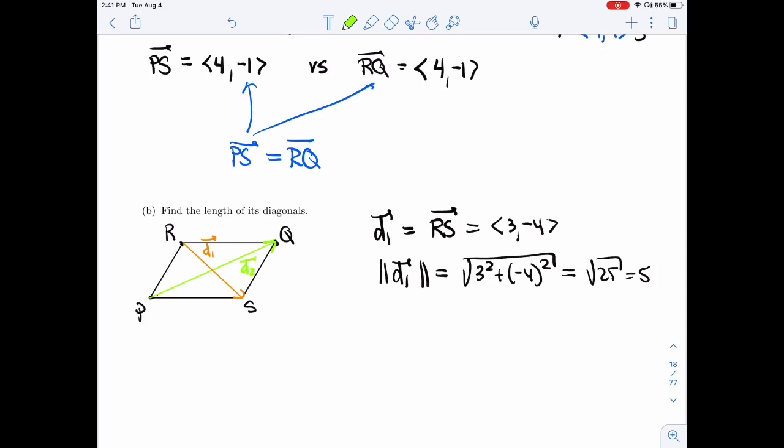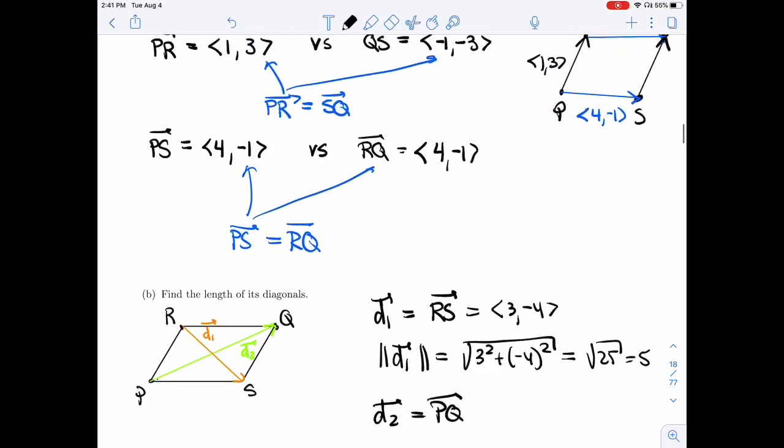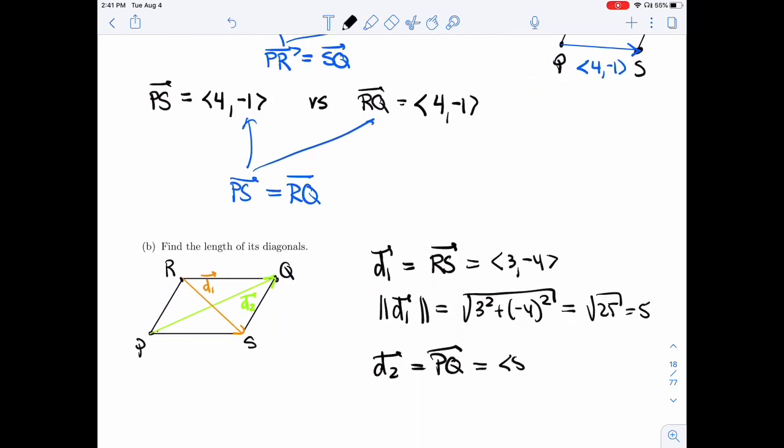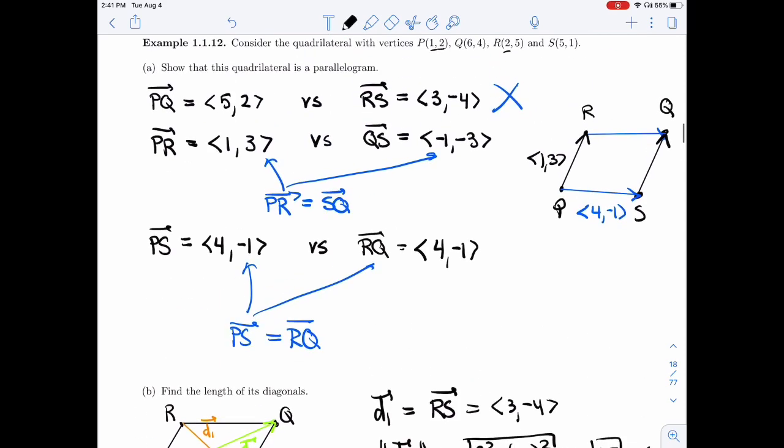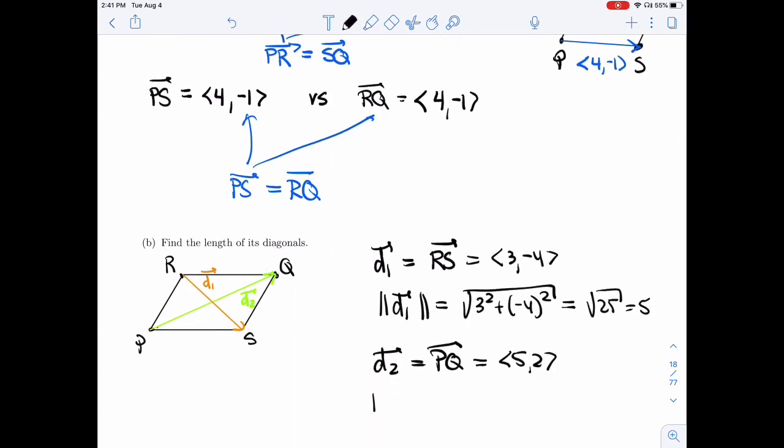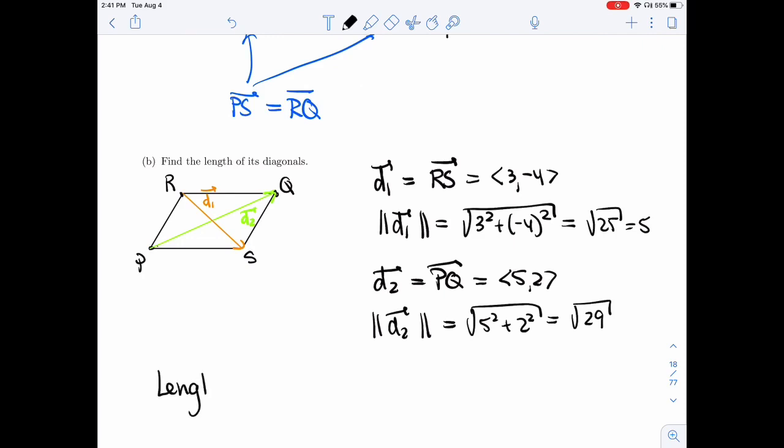Now D2, I'm going to make it P to Q. P to Q we've also found to be <5, 2>. And so the length of that second diagonal is square root of 5 squared plus 2 squared. That's square root of 25 plus 4. This doesn't simplify as nicely, but we have both lengths. So the lengths of the diagonals are 5 and root of 29.